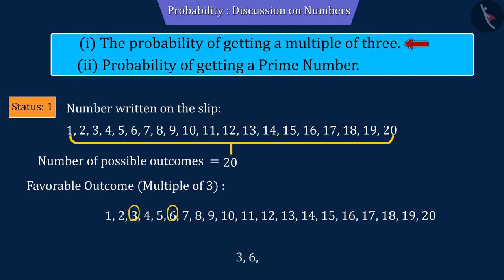Between 1 and 20, the numbers 3, 6, 9, 12, 15 and 18 are multiples of 3, a total of 6 numbers.